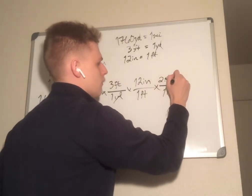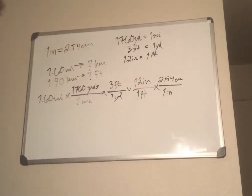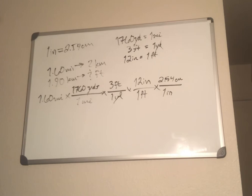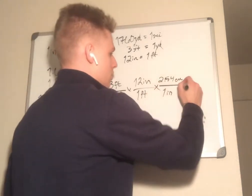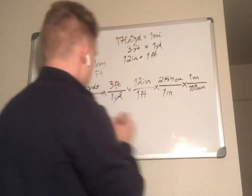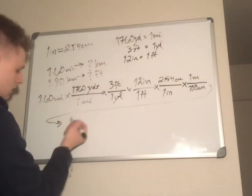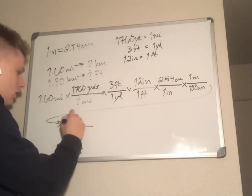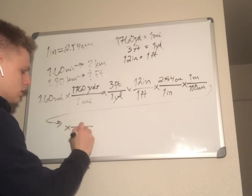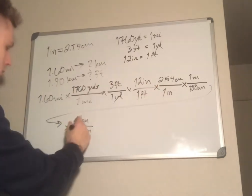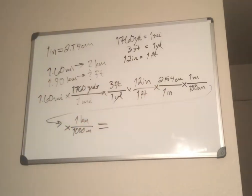From inches we can go straight to centimeters: one inch equals 2.54 centimeters. Then how many centimeters are in a kilometer? That's the metric system — 100 centimeters in one meter, and then 1000 meters in one kilometer.